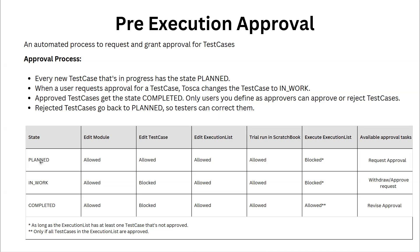The approval tasks available in in-work state are to withdraw or approve the request. In the completed state, you are allowed to edit the module, cannot edit the test case, are allowed to edit the execution list or run it in scratch book, and are allowed to execute the execution list. If the state is completed, the approval task available is revised approval. One important condition for executing an execution list: as long as the execution list has even one test case which is not approved, it is blocked. Execution is only allowed if all test cases in the execution list are approved.